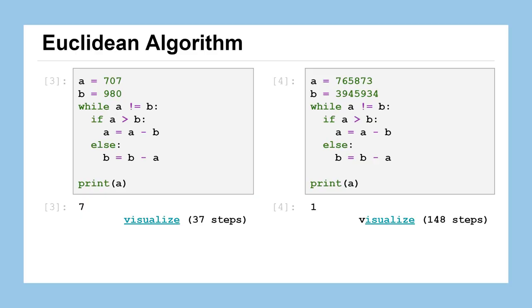Redoing the example of 707 and 980, finding their greatest common divisor of 7, only took 37 steps — actually fewer than 2 and 26. For really big numbers like 765,873 and 3,945,934, the computer only takes 148 steps to find that those two are relatively prime, sharing no factors besides 1. There's actually an even slightly more efficient version we'll cover in another lesson.